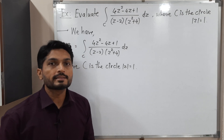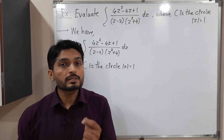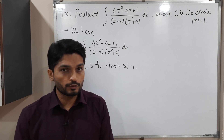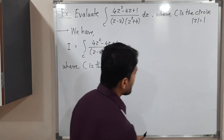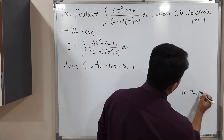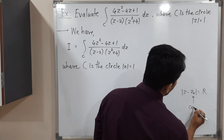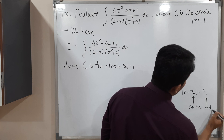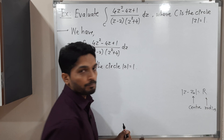We have to draw this circle first. To draw this circle, we need the center and radius. So let us find the center and radius of this circle. I will compare the given equation with the standard equation of a circle, where Z₀ is the center and R is the radius.